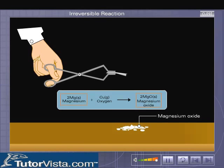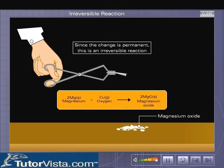Can we obtain magnesium back from magnesium oxide by any physical method? Certainly not. Therefore, it is a permanent change and the reaction is an irreversible reaction.